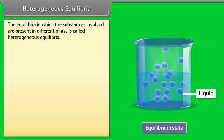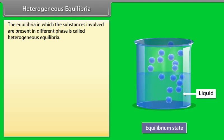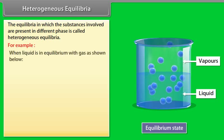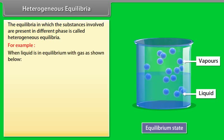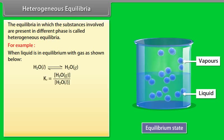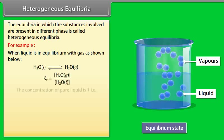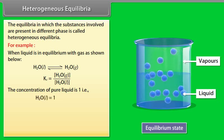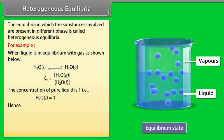Heterogeneous Equilibria: Equilibria in which substances are present in different phases are called heterogeneous equilibria. For example, when liquid is in equilibrium with gas, the concentration of pure liquid is taken as 1 — that is, H2O (liquid) = 1.